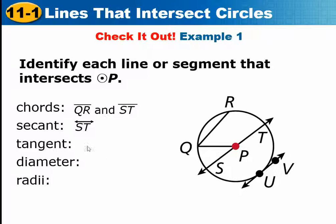Tangent is UV, line UV. The diameter is segment ST. And the radii are PQ, PT, and PS. The radii always has the center as one of its endpoints.